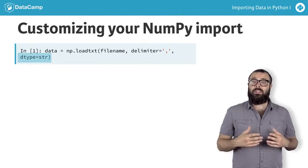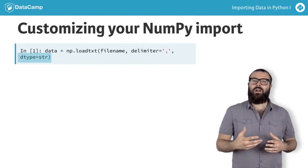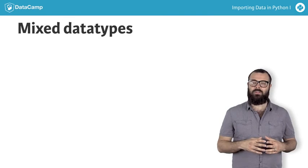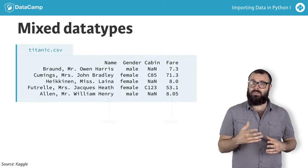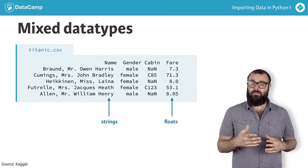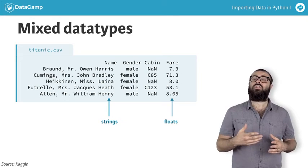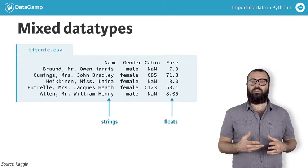loadtxt is great for basic cases, but tends to break down when we have mixed data types — for example, columns consisting of floats and columns consisting of strings, such as we saw in the Titanic dataset.